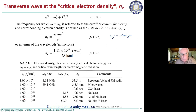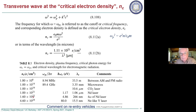You could also put in Ti:sapphire, and harmonics of neodymium — for instance, the fourth harmonic of neodymium would go into a higher density, up to 10^22.